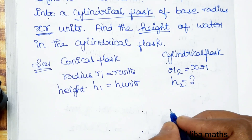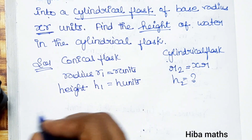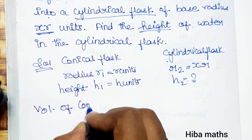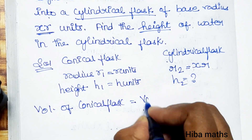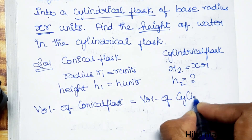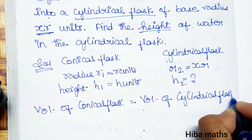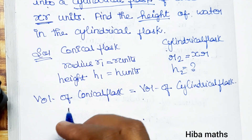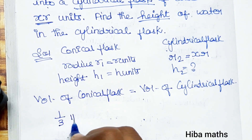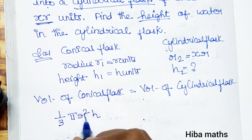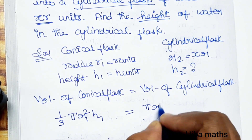The volume of the conical flask is (1/3)πr²h, where the cone has radius r₁ and height h₁. This is equal to the volume of the cylinder, which is πr²h, with radius r₂ and height h₂.